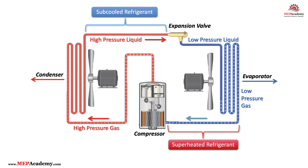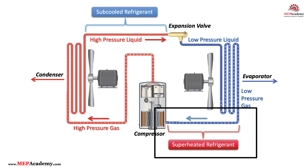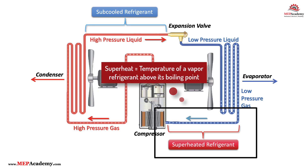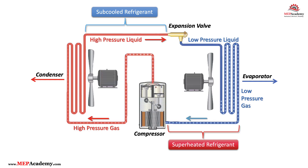Let's start with superheat. Superheat is the temperature of a vapor refrigerant above its boiling point at a given pressure. In other words, it tells us how much heat the refrigerant has absorbed after it has completely boiled into a vapor in the evaporator.